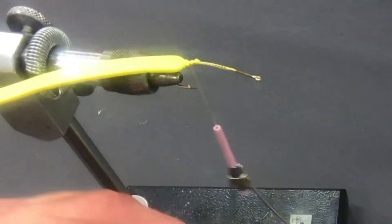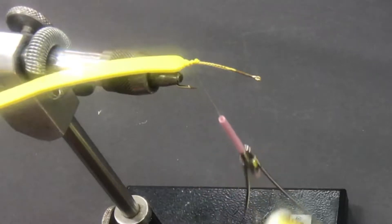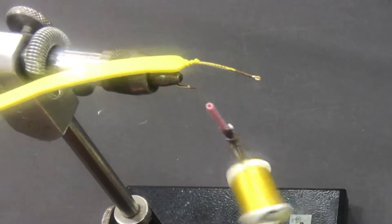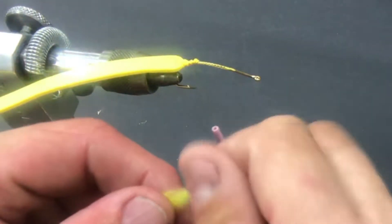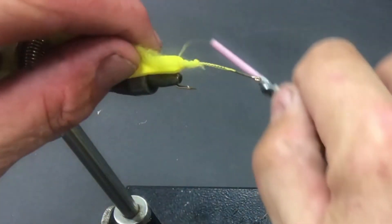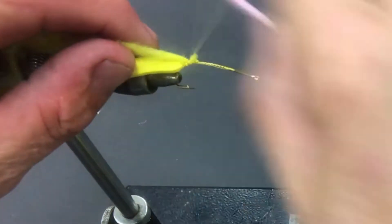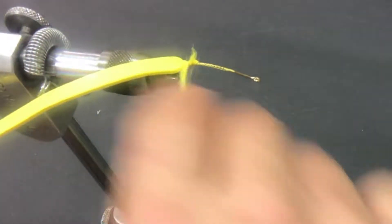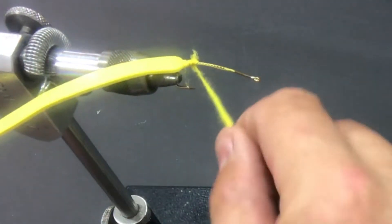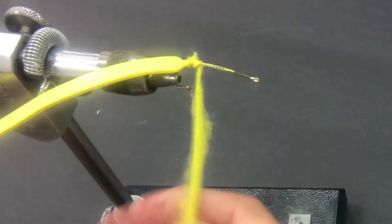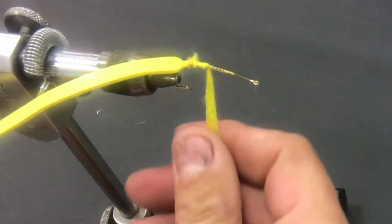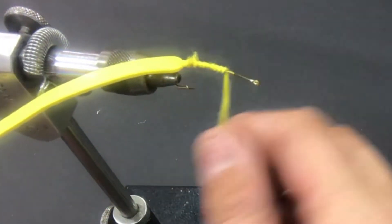Next thing we're gonna do is we're gonna take our dubbing. And as with most dubbing, less is more. I'm gonna take just the tip of it and spin it. Tie it down. Parallel the thread with the dubbing. And I'm just gonna wrap a body. As I'm going, I'm just spreading that dubbing out. It's a lot quicker than touch dubbing or doing anything else.